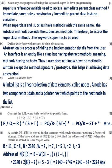Part 10: A linked list is a linear collection of data elements called nodes. A node has two components: data and a pointer next which points to the next node in the list. Question 2, Part 1: The answer has been shown.